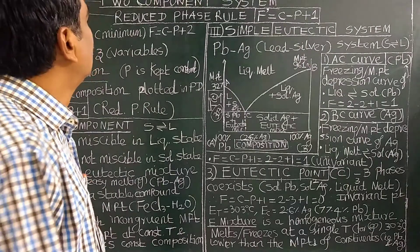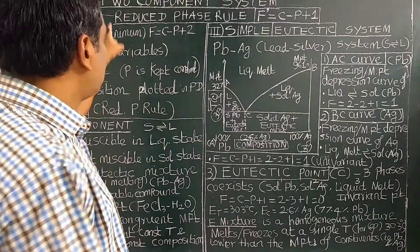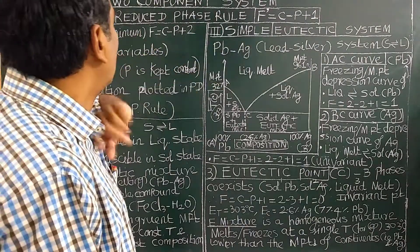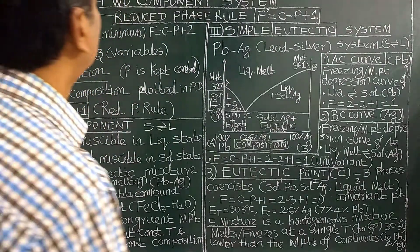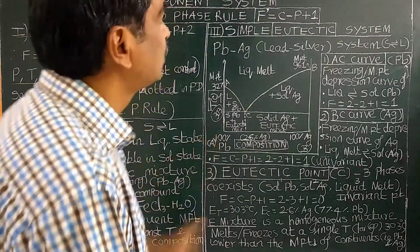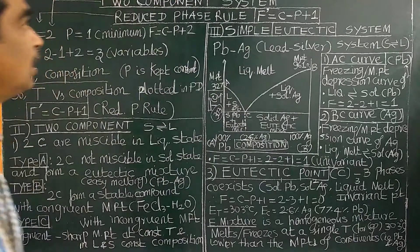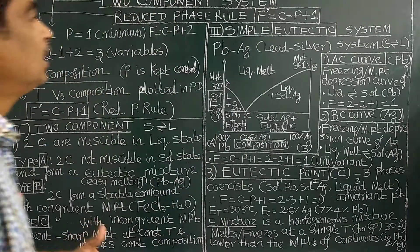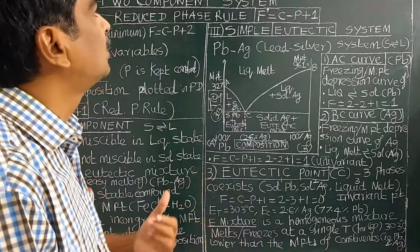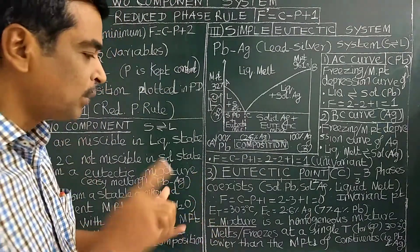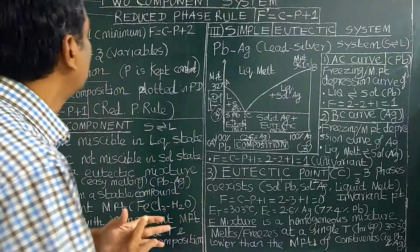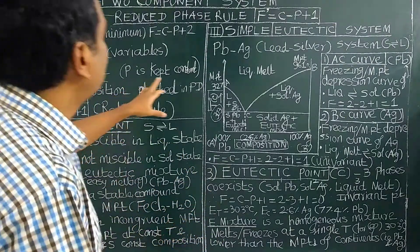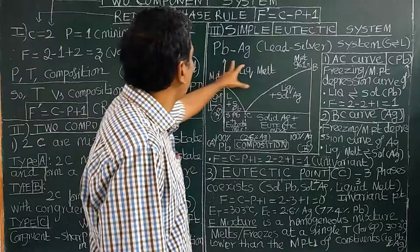Good morning. Let us study today the two-component system. What is a two-component system? What is the reduced phase rule? We have earlier studied the one-component system — for example, water. Water is a pure one-component system. Here we study the two-component system, for example, lead and silver. Lead and silver is a mixture — two components are present.